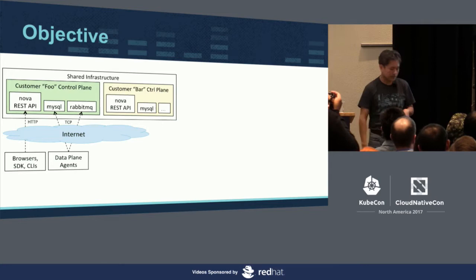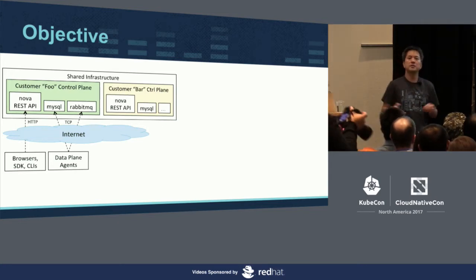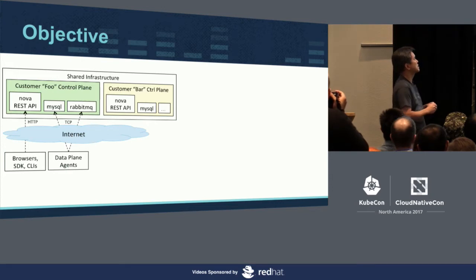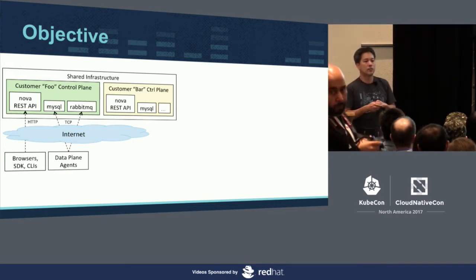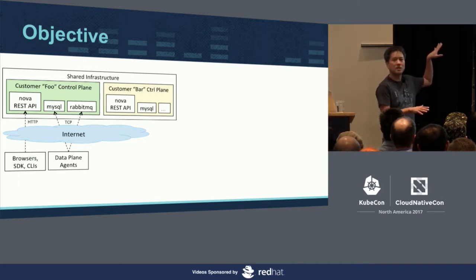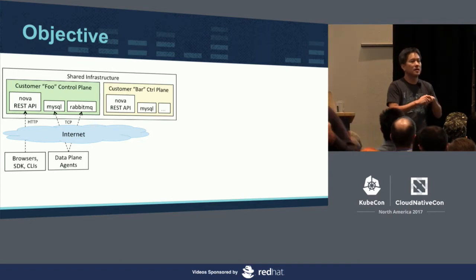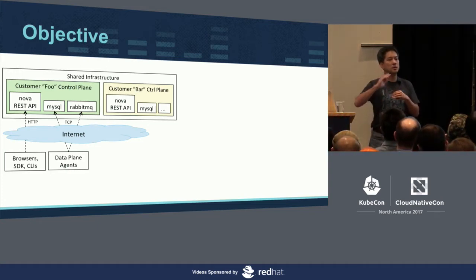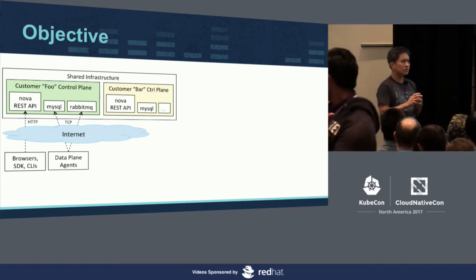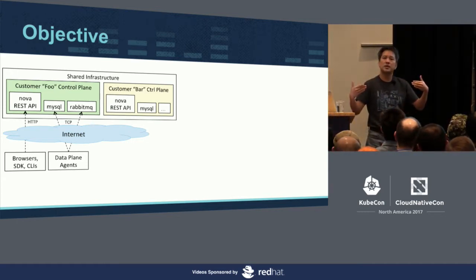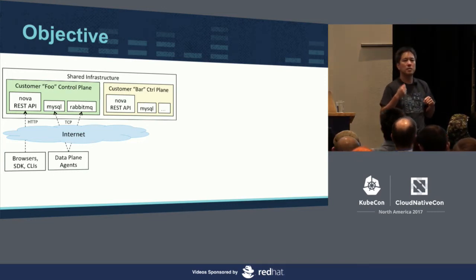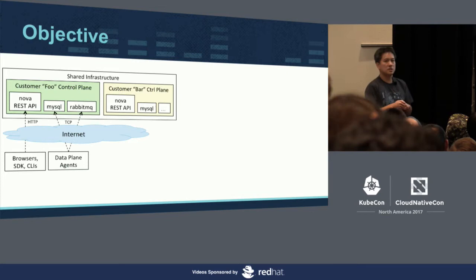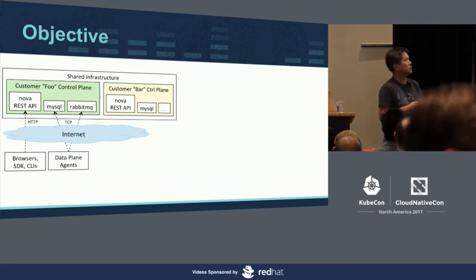What does a control plane look like? For Kubernetes, it would be the master nodes most of you are familiar with. For OpenStack, we would run dozens of services such as Nova API. On the other side, customers run clients — web browsers, CLIs, SDKs — and those typically communicate over HTTP over the internet to one of the control plane services. There are also data plane agents which run close to the hardware, and those need to use binary protocols over TCP. Examples include RabbitMQ and even MySQL, and those connections tend to be mutually authenticated over TLS.